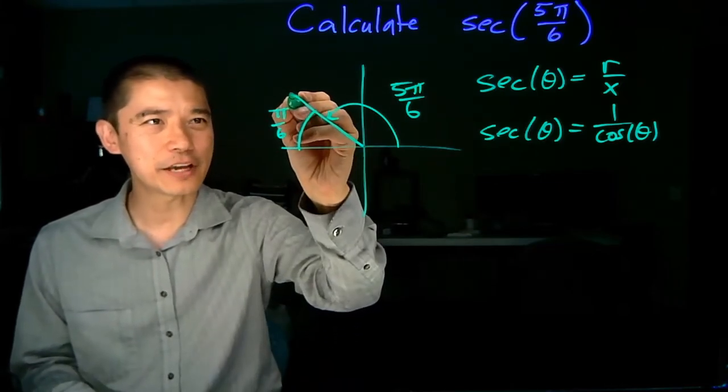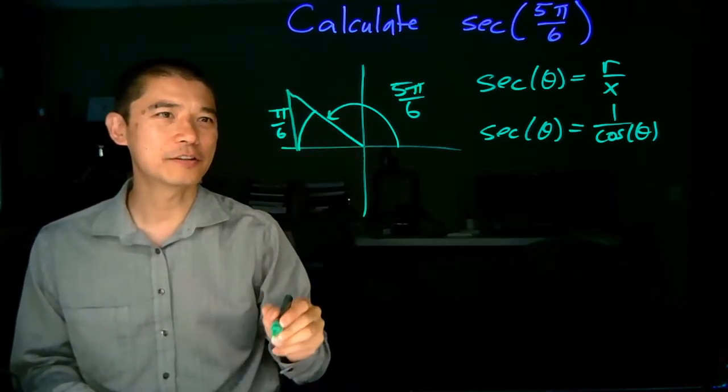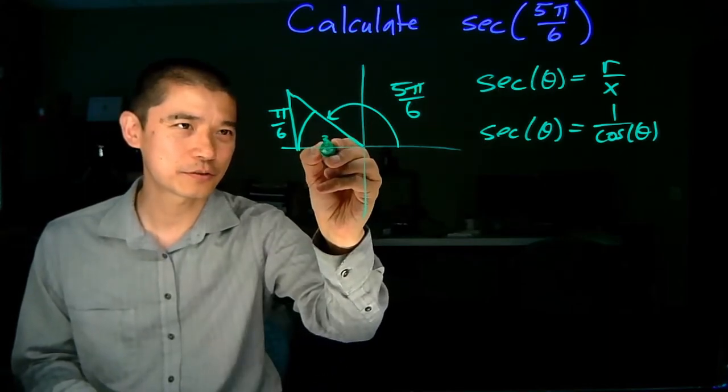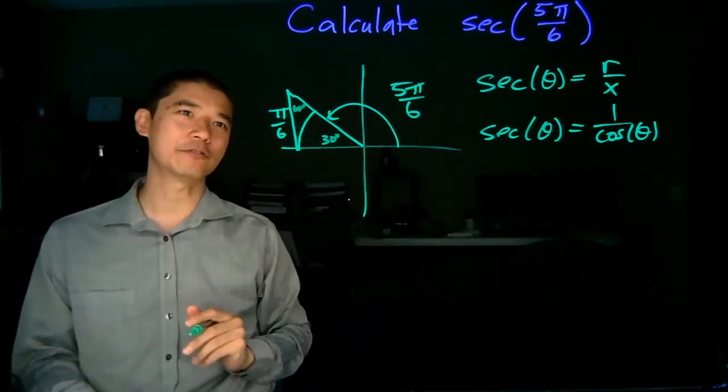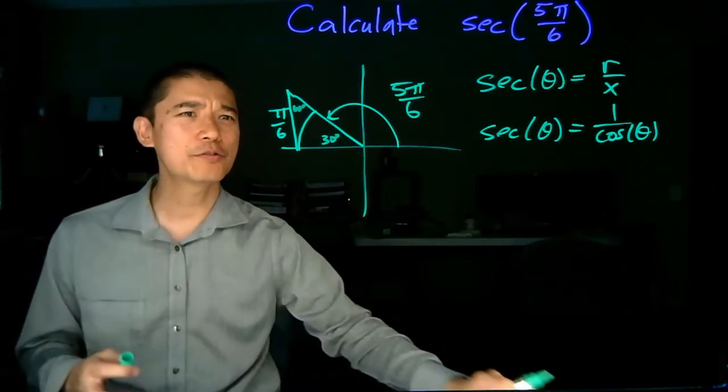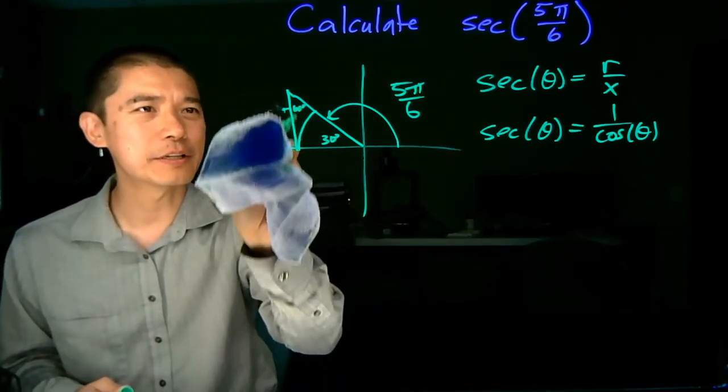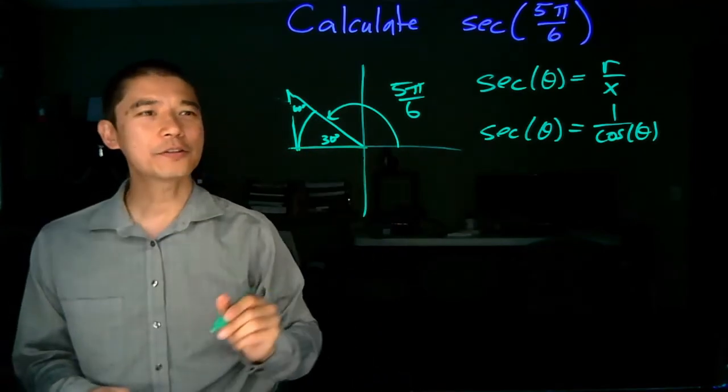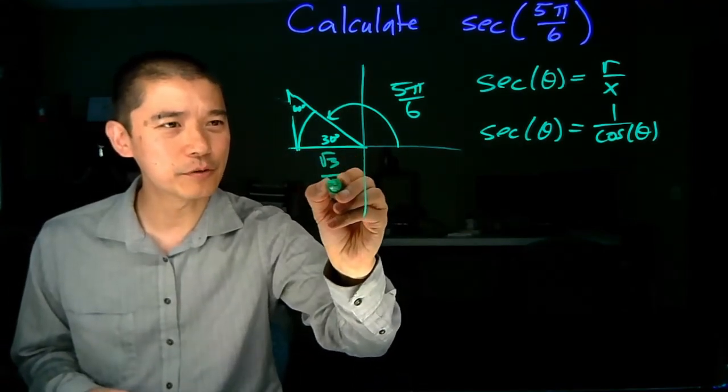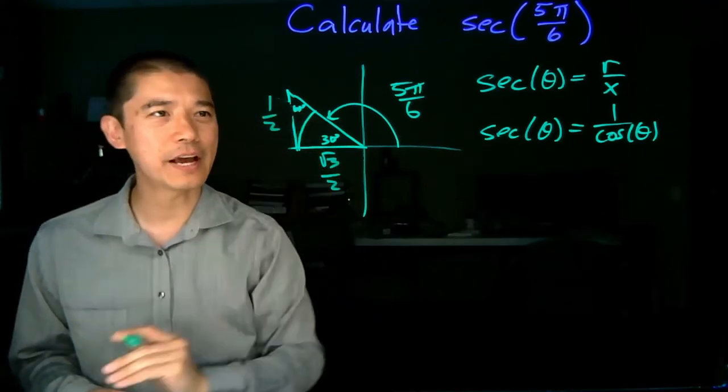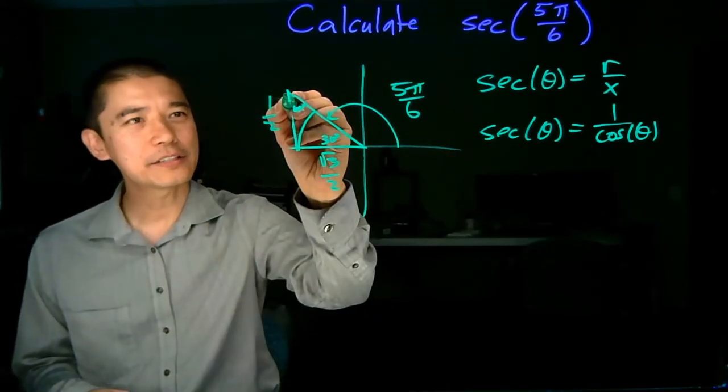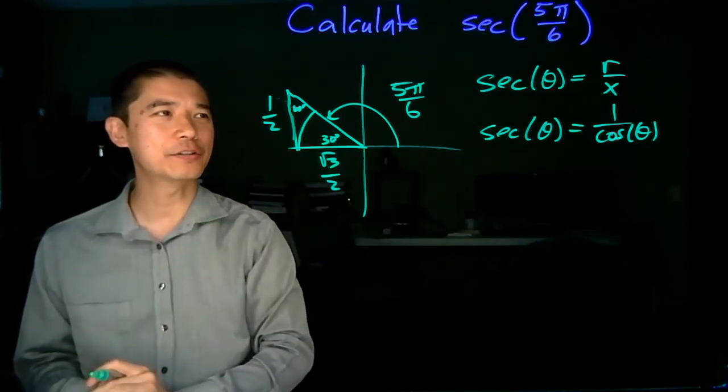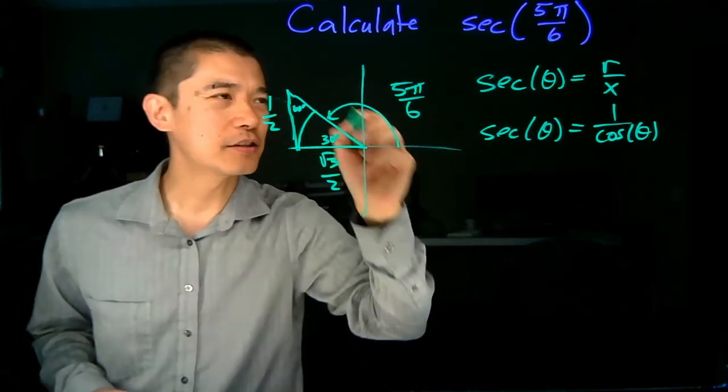Because we know the reference angle, there is going to be pi over 6, which is 30 degrees, so there's a 30 degree angle, there's a 60 degree angle. We can just use what we know about these values. For next to the 30 degree angle, that's going to be square root of 3 over 2, and this has length 1 half. The only catch is that since we are in the second quadrant, we know that the x value is going to be negative.